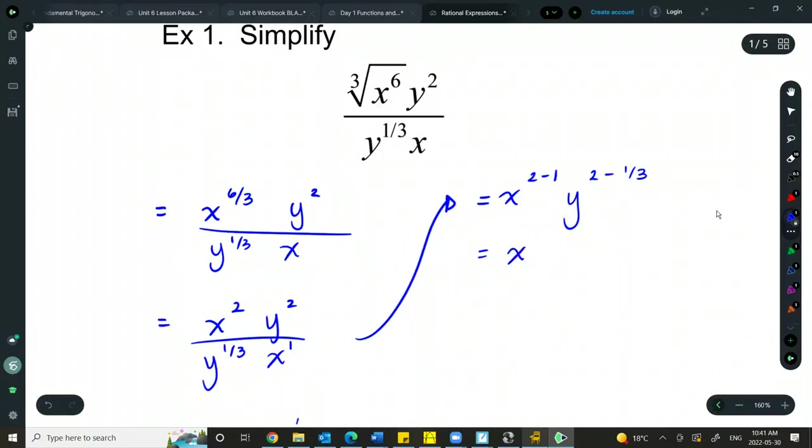So x is pretty easy. That will just simplify to x to the exponent 1. Y, I'm going to create a common denominator here. So if this is 2 over 1, it's going to become 6 over 3 minus 1 over 3. And we'll get y to the 5 over 3. If any of those happen to be negative, we would make sure we move it down into the denominator and make it positive. But in this case, we don't have anything that's negative, so we can just leave it as is.